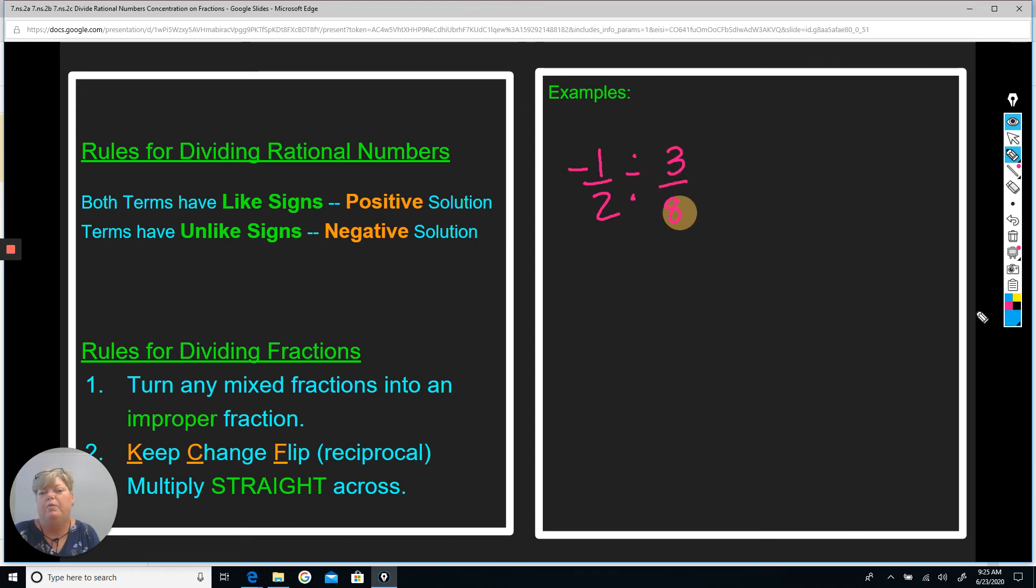And if you want to do that, where you go ahead and find the sign, go ahead and find the sign. So this is a negative term divided by a positive term. They are unlike signs. So my solution will be negative. So if you want to go ahead and write that out there so you don't forget, that's great as well.